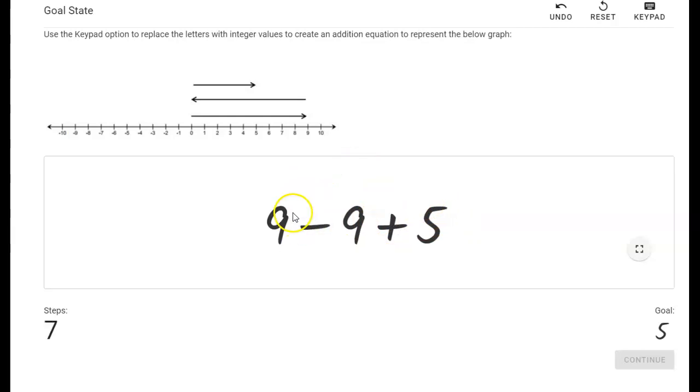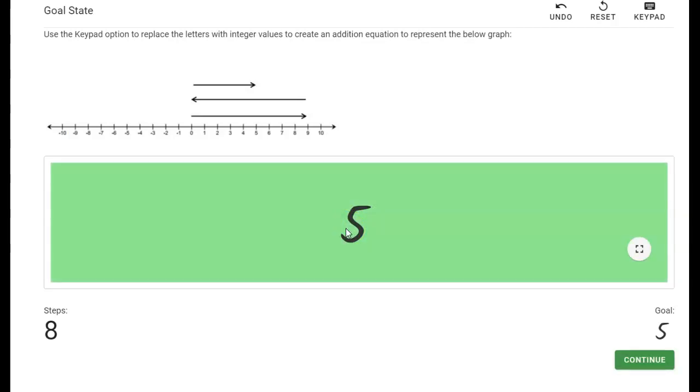And what do you notice? That nine plus negative nine simplifies to nine minus nine. That is to say, adding a negative nine is the same thing as subtracting a nine. So if I do that, I should get zero, and then zero plus five simply gives me five. So in this example, we started off with a positive nine, and then we added a negative nine, which gave us a zero, and then we added five again to give us a total of five, or a result of five.